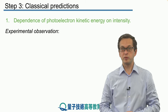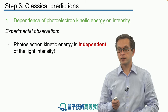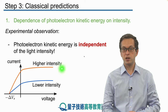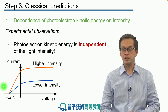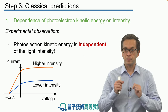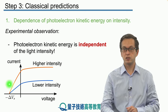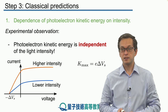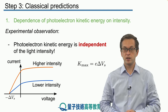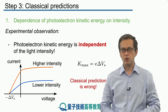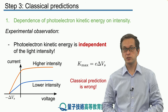Do we observe this experimentally? No. Electron kinetic energy is independent of the light's intensity. We saw in the image that the current is different for different intensities, but the kinetic energy — given by delta V_s — is the same for both intensities; the graphs collapse to this single value of delta V_s. In particular, we showed that k_max equals e times delta V_s. So experimentally, we don't observe any dependence between intensity and kinetic energy. On this observation, the classical prediction is wrong.